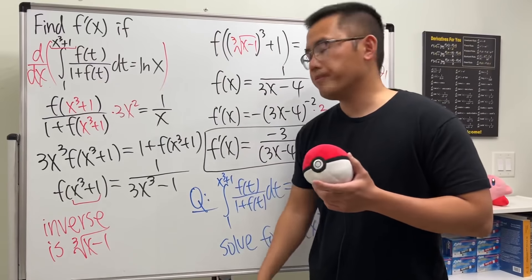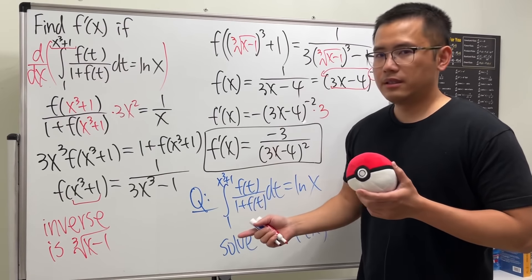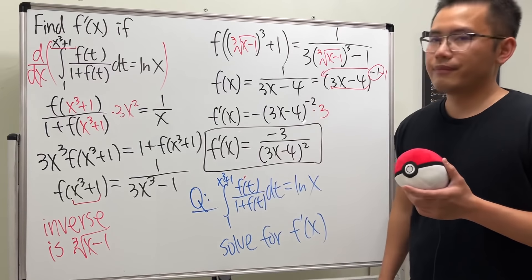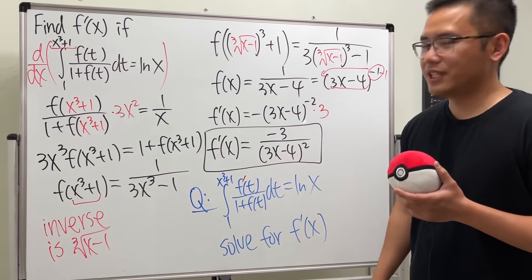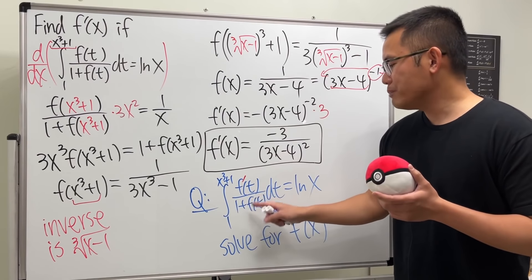Just like what we did over there. But instead of giving you guys this, I'm going to change one thing a little bit. Yeah, this is the derivative. So suppose we have f'(t) on the top over 1 + f(t).